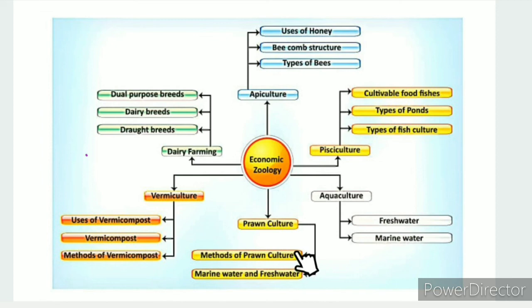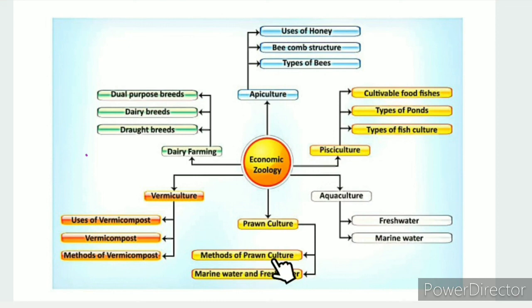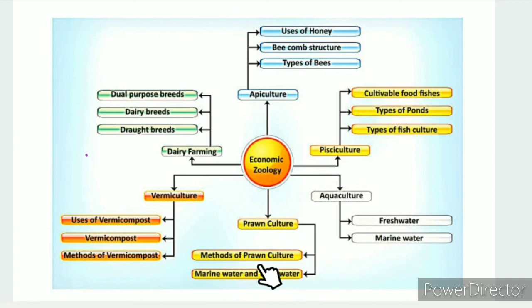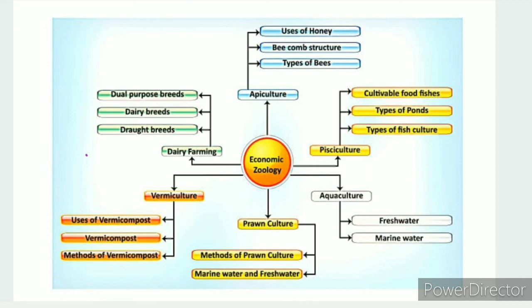In summary, there are two methods of RON culture: seed collection and hatchery method, and paddy-cum-RON culture. Kerala's POCOLI method is famous. Examples include marine water and freshwater RON species. In the next video, vermi-technology will be discussed. Thank you.